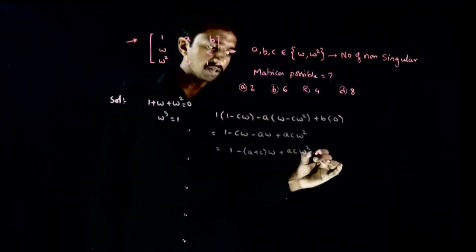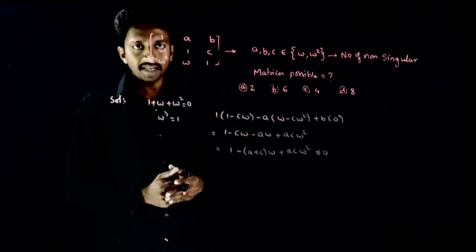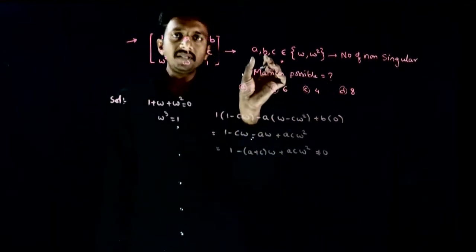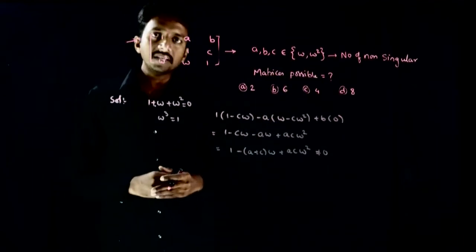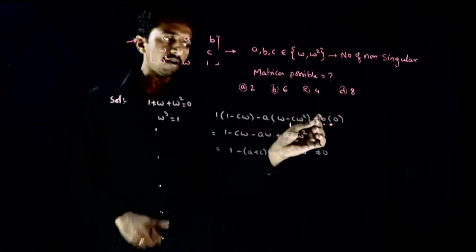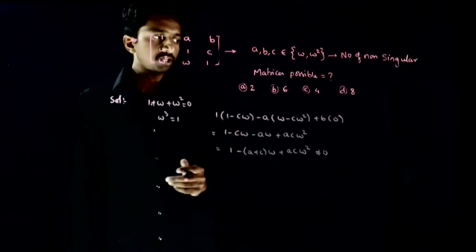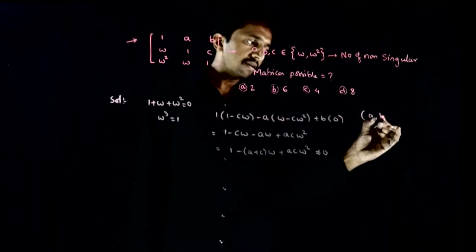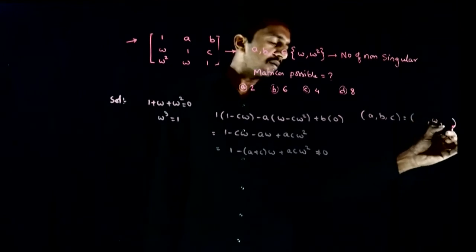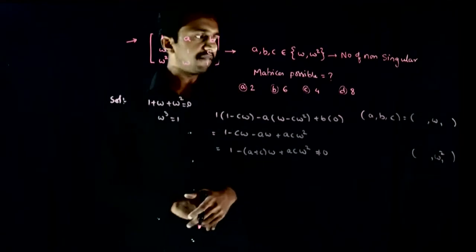This determinant has to be non-zero. Notice that the determinant expression 1 − (a+c)ω + ac·ω² does not depend on b at all. So b can be ω or ω² freely — it does not affect the determinant.